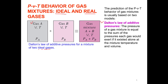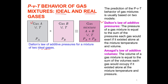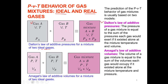The second law is Amagat's law of additive volumes, which states that the volume of a gas mixture equals the sum of the volumes of individual components, provided each gas exists at the mixture temperature and pressure.